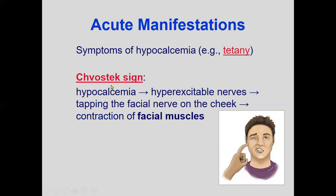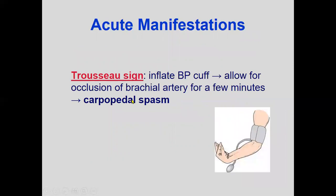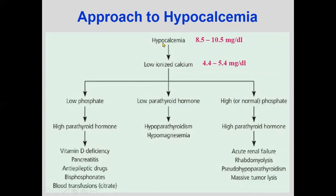Hypocalcemia leads to hyper-excitable nerves. The Chvostek sign involves tapping the facial nerve over the cheek, leading to contraction of the facial muscles. The Trousseau sign involves inflating a BP cuff and maintaining it for 10 to 20 minutes at 20 to 30 mmHg above systolic, after which there will be a carpal-pedal spasm — both are typical of acute hypocalcemia.